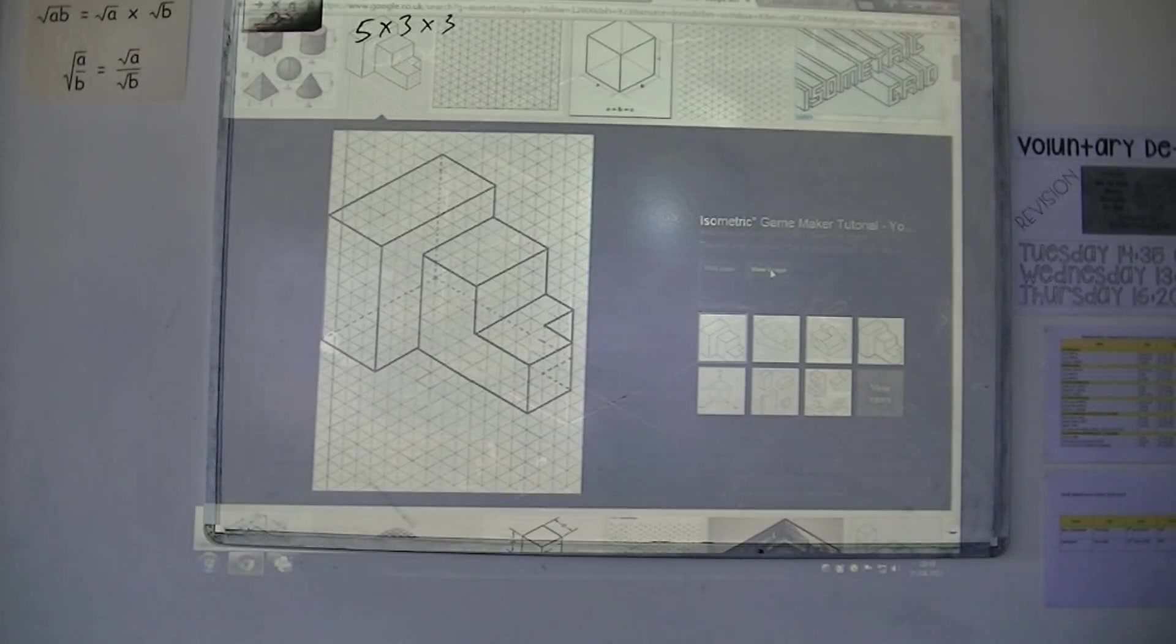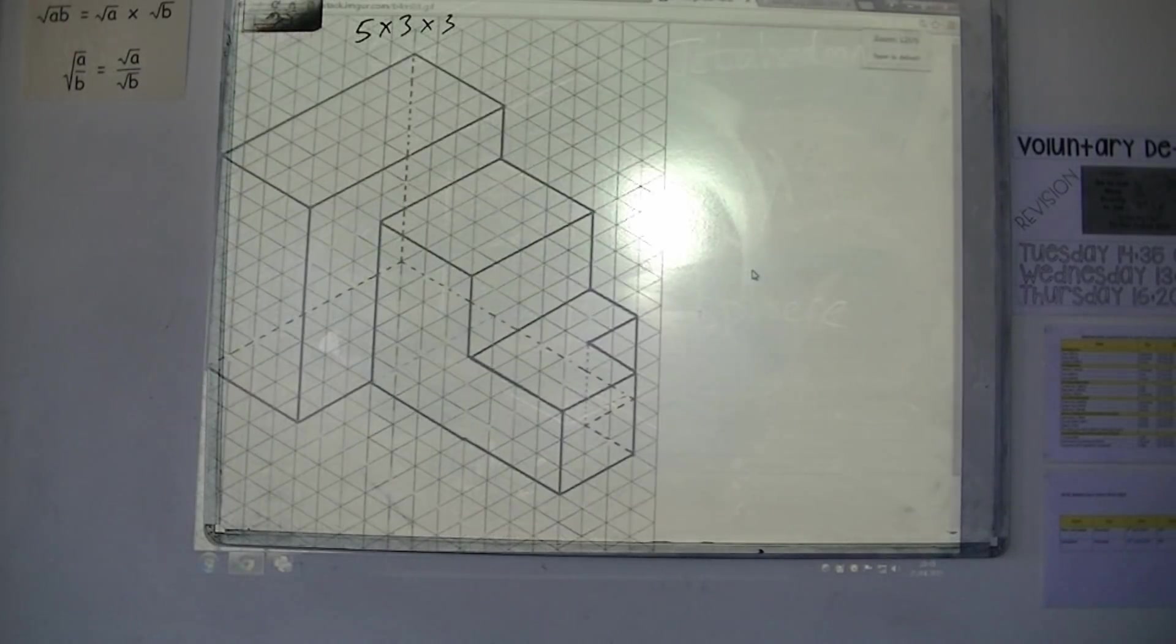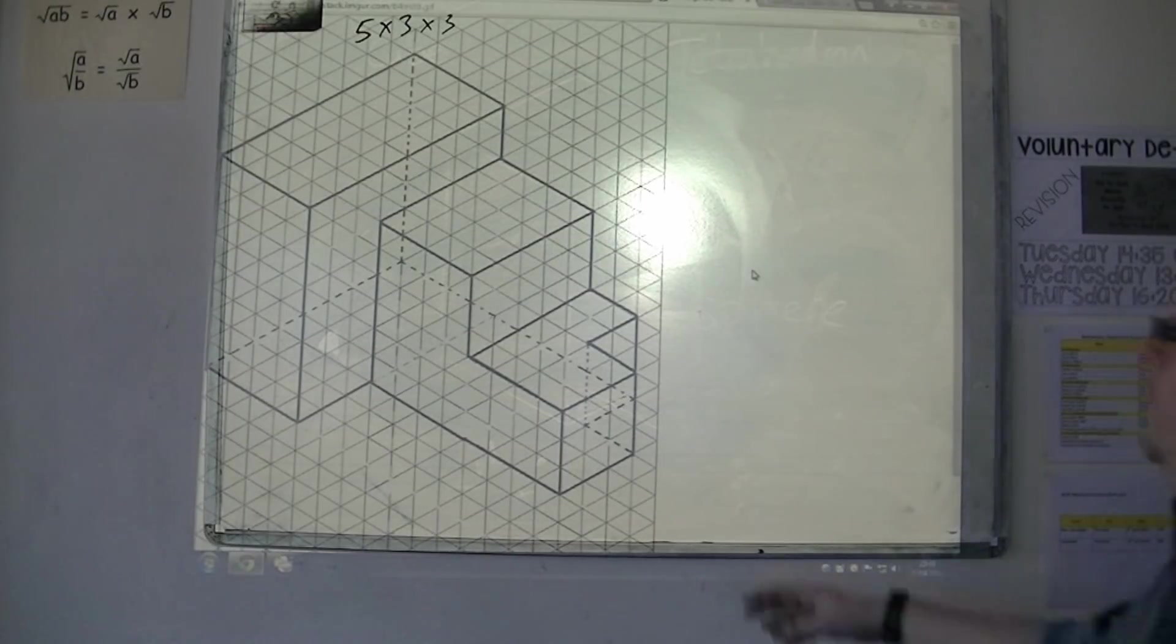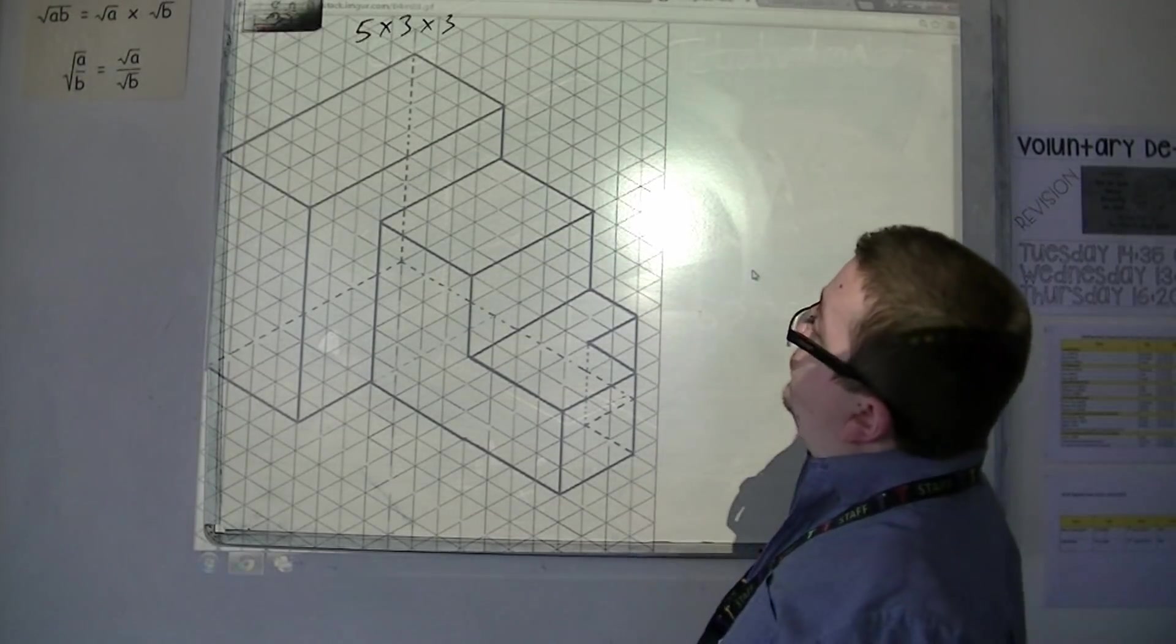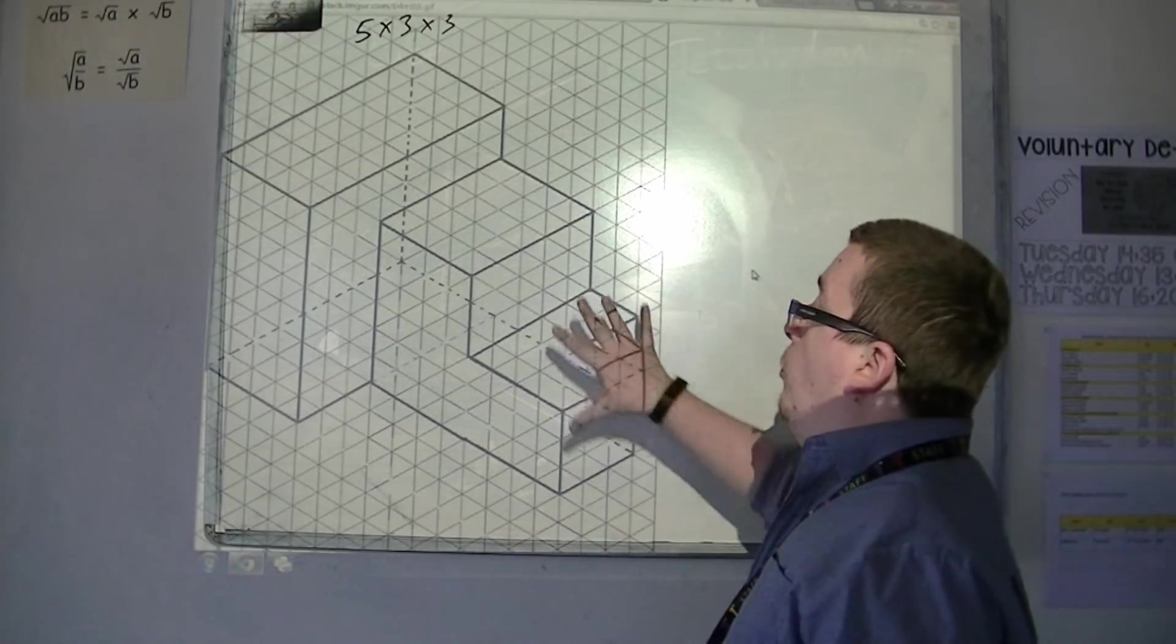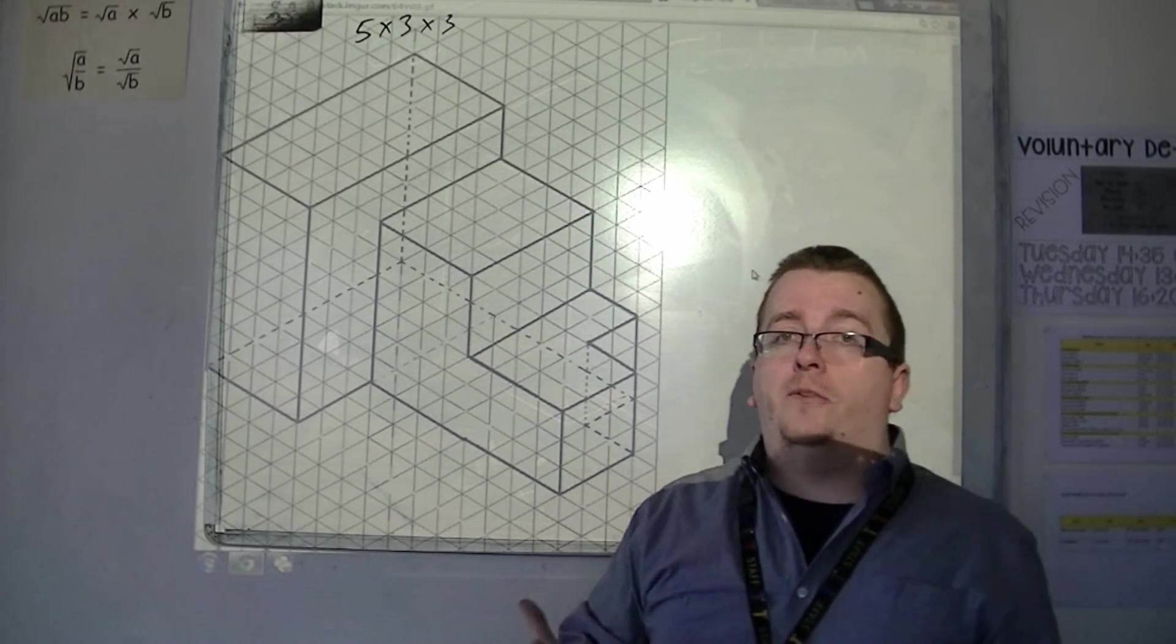You can do quite interesting shapes. So, here's another one, for example, that someone else has drawn. So, you can do all sorts of shapes on isometric paper.